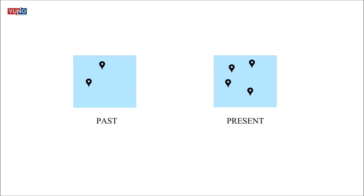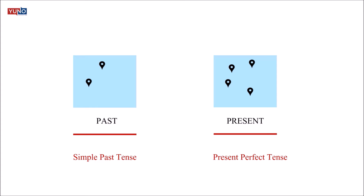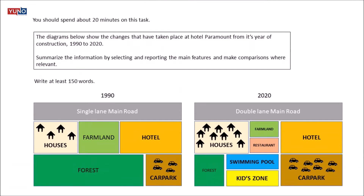We'll basically be looking at two maps of the same place, but one will be of the past and one of the present. We'll have to describe the main features and differences between the two maps. As we'll be talking about two different times — past and present — it becomes very important that you use proper tenses. To describe the map of the past we'll be using the simple past tense, whereas to report the present day map we'll be using present perfect tense. Why present perfect? Because even though the changes started in the past, they continue to the present day and they exist in the current time.